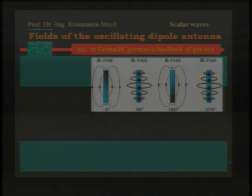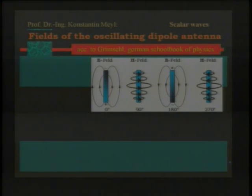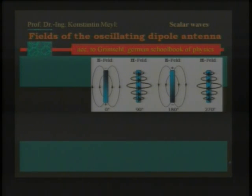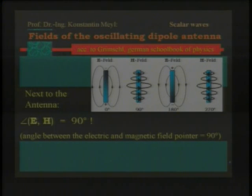If I look at the school books we had — a German school book of physics I had as a boy, the Grimsehl, a very famous German school book — it is explained how the fields work with a dipole. You have a dipole, and you see the electric fields like this. The charge carriers are on top, and if they are moving, then we get the magnetic fields at 90 degrees later, and then we get the opposite charge, and so on. This explains that next to the antenna in the near-field zone, we have a phase angle between electric and magnetic fields of 90 degrees. You learn that at school — that's well known.